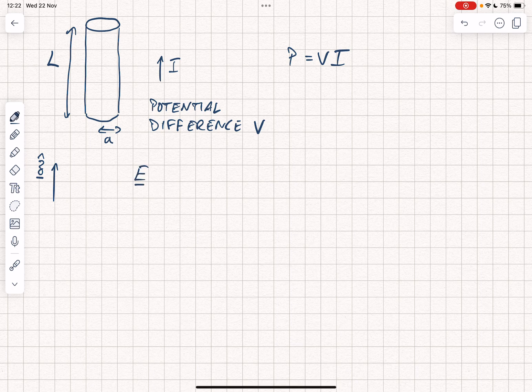We can specify that the electric field E is equal to V over L in the Z direction. The current density flowing in the wire is going to be I over pi A squared. That's the area of the wire also in the Z direction.